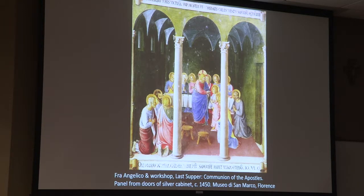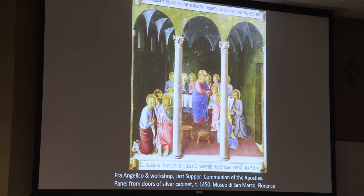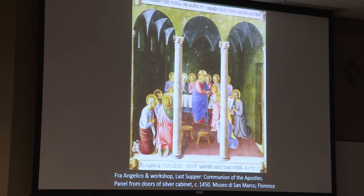As another variant on Last Supper imagery: this small scene is from a series of 35 panels representing episodes from the Gospels, forming the cupboard doors for a silver cupboard in San Marco in Florence — the Dominican convent — painted by Fra Angelico, Beato Angelico, a Dominican friar who was also a very gifted painter, with members of his workshop.